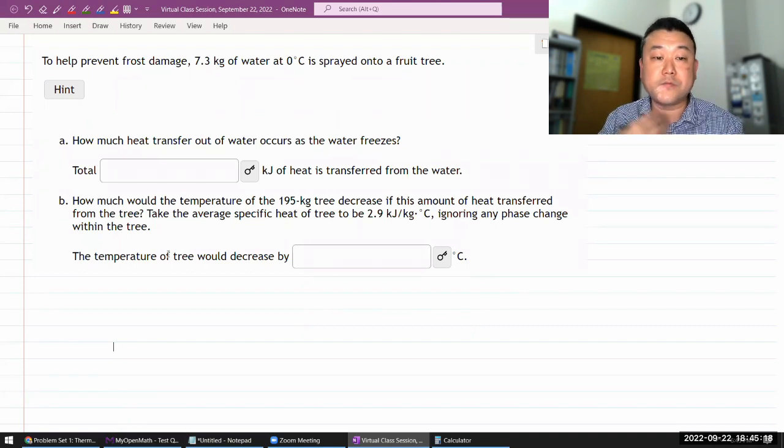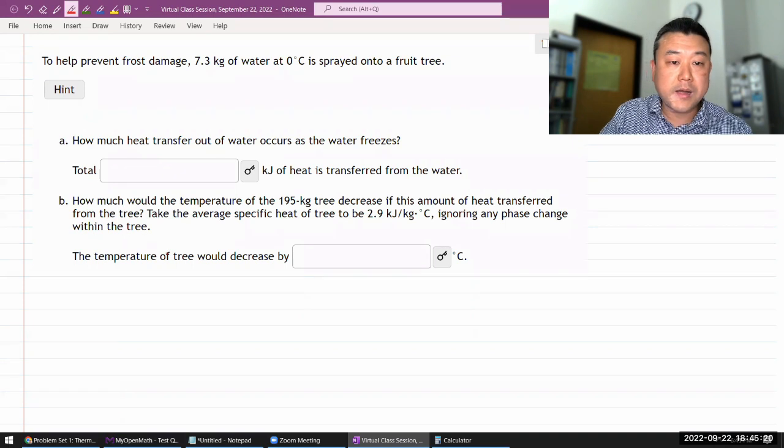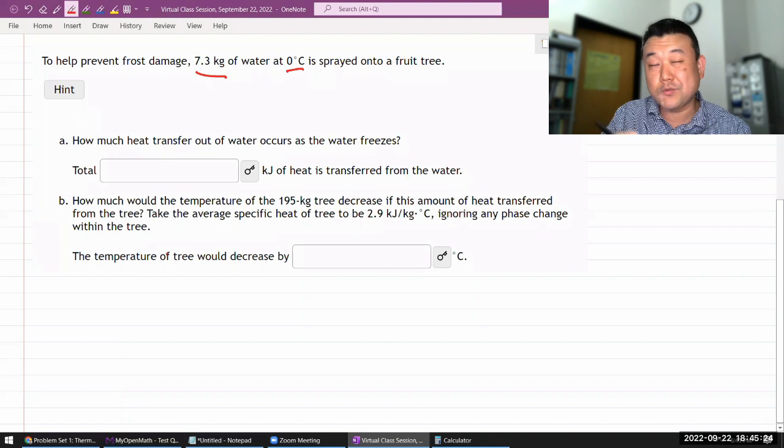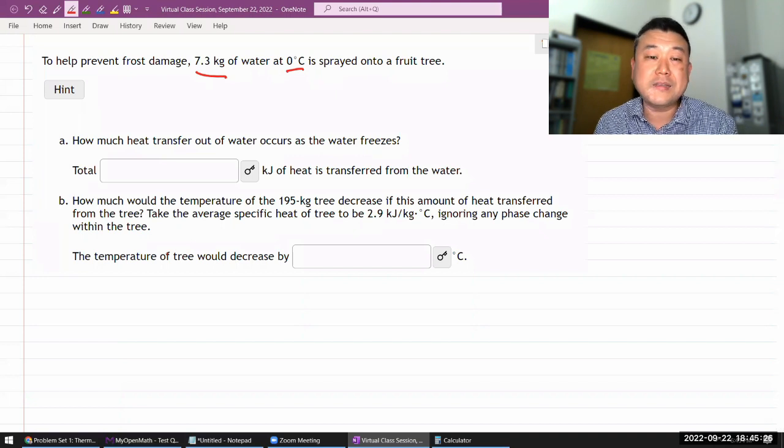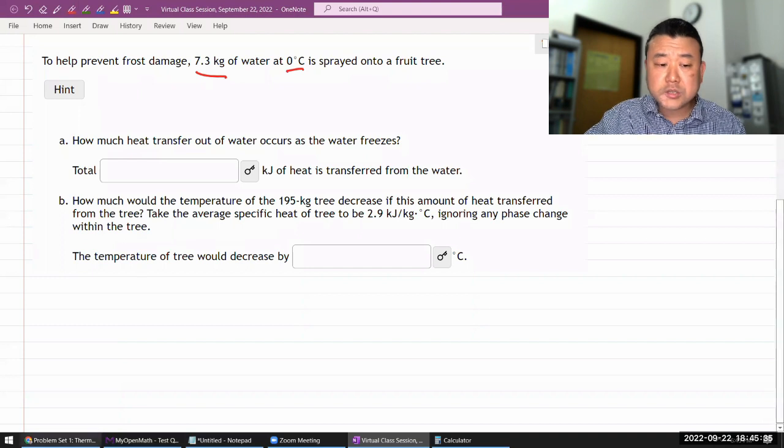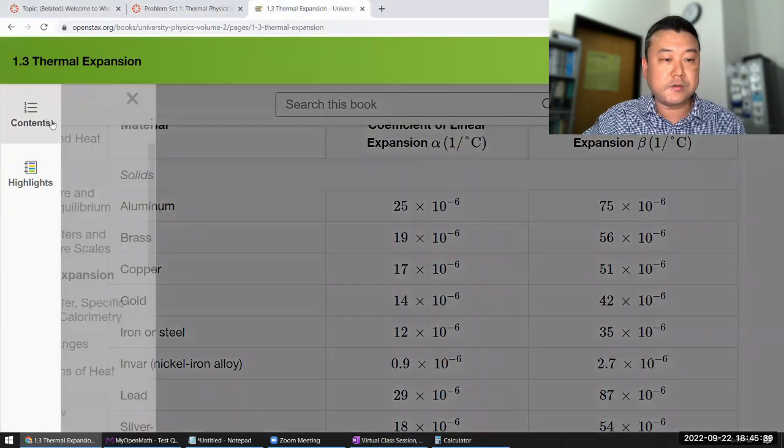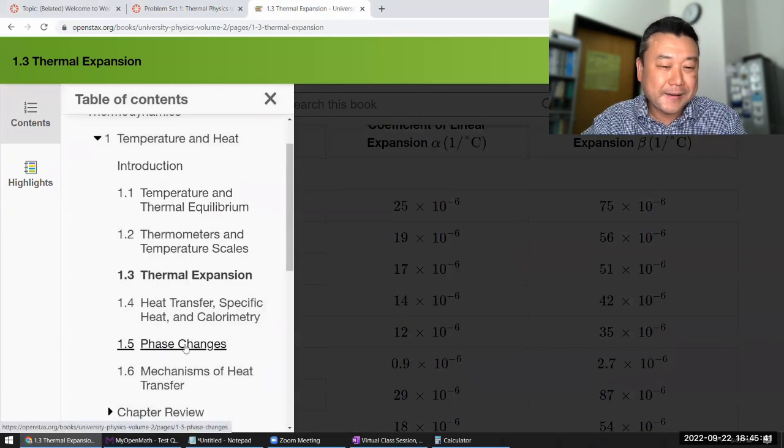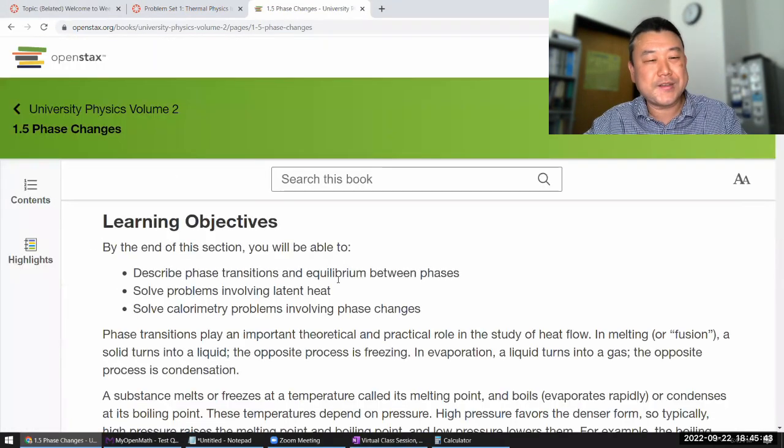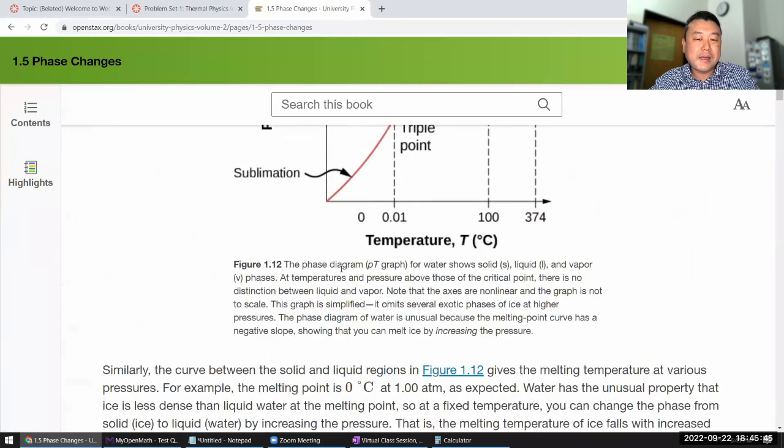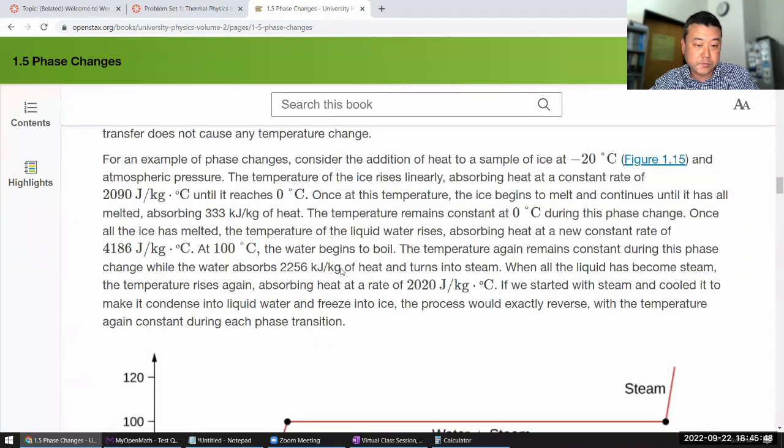They talk about preventing frost damage. Some amount of water is at zero degrees C, so we don't have to worry about the amount of heat needed to change temperature of water. They just spray it onto a fruit tree, so you might think it'll freeze. There's the textbook section on latent heat of fusion, or latent heat. I think that should be under phase change.